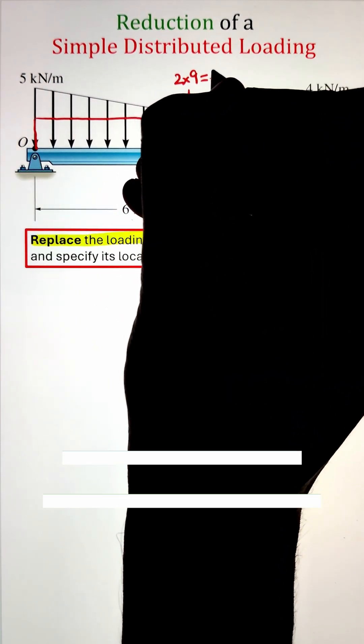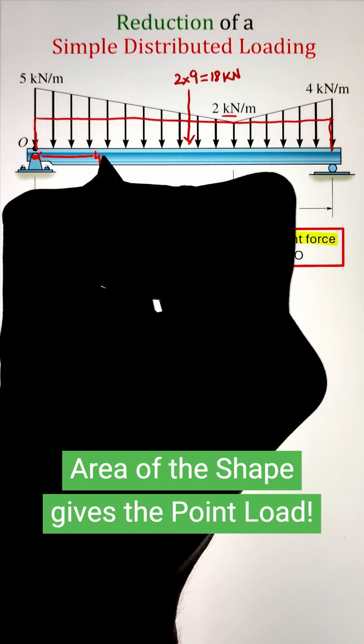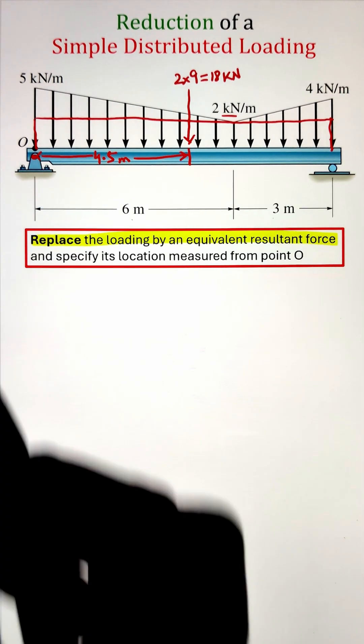So to start, I have a rectangular shape having a width of 9 meters and a height of 2 kilonewton per meter. Multiplying the two will give us a point load of 18 kilonewton that is acting in the middle of the rectangle.